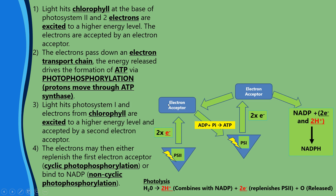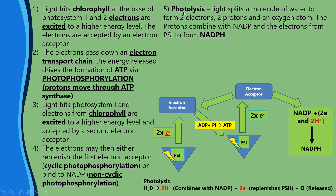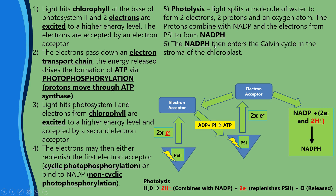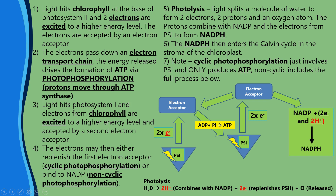Step 4: The electrons may then either replenish the first electron acceptor — this is cyclic photophosphorylation, cyclic because it goes in a cycle, photophosphorylation because we're adding phosphate with light — or they bind to NADP in non-cyclic photophosphorylation. Step 5 is photolysis: light energy splits a molecule of water into two protons, two electrons, and half an oxygen molecule. The protons combine with NADP and the electrons from photosystem I to form NADPH, which enters the Calvin cycle in the stroma. Note that cyclic photophosphorylation only involves photosystem I and does not produce NADPH.